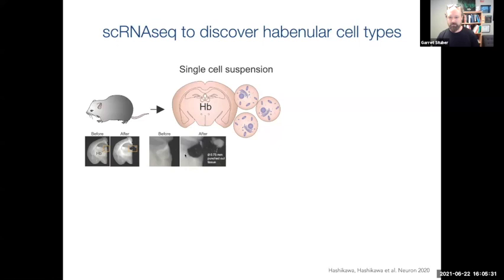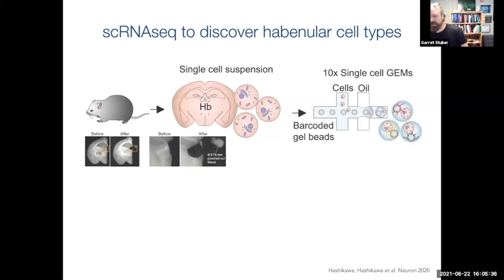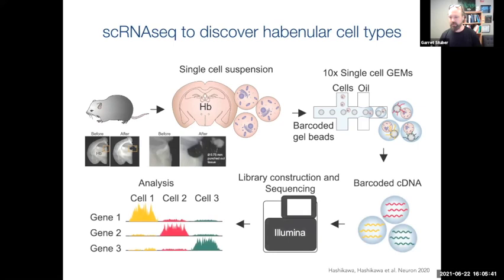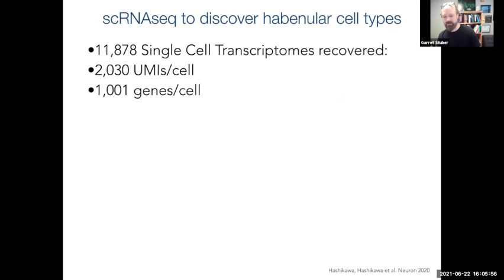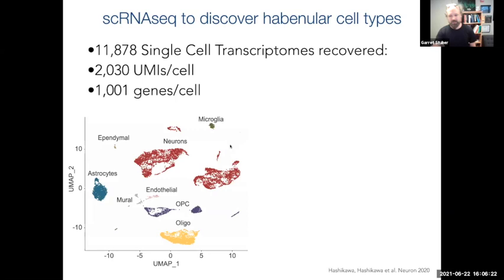This is data from a paper published last year in Neuron from Yoshiko Hashikawa and Koichi Hashikawa in my lab, where we used single cell RNA sequencing to delineate the different cell types in the habenula. They dissected out both the lateral and medial habenula from mouse brains and performed 10x Genomics single cell transcriptional profiling, barcoding cDNAs from different messenger RNA transcripts, constructing libraries, and doing bioinformatics to delineate all cell types and their transcriptional markers. From this dataset, we recovered about 11,800 single cell transcriptomes.